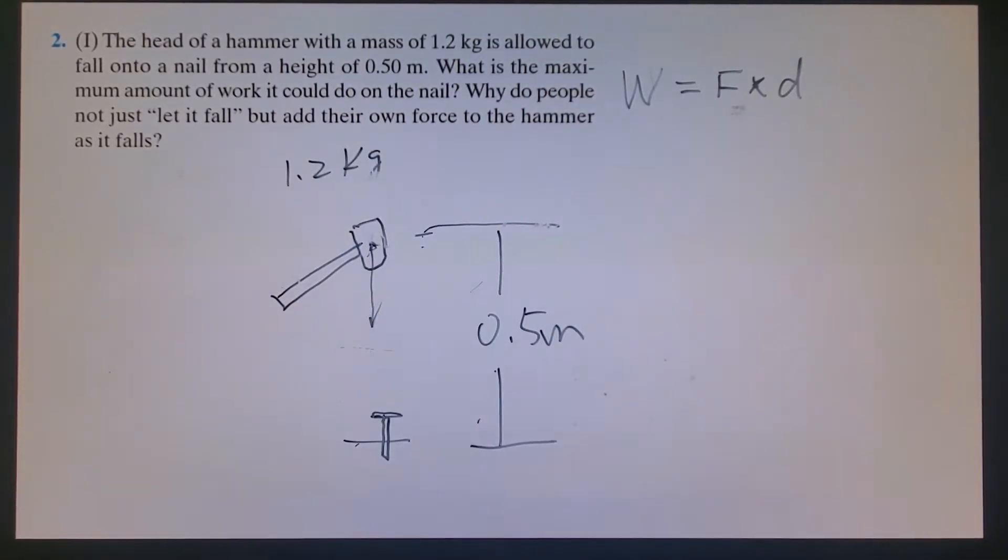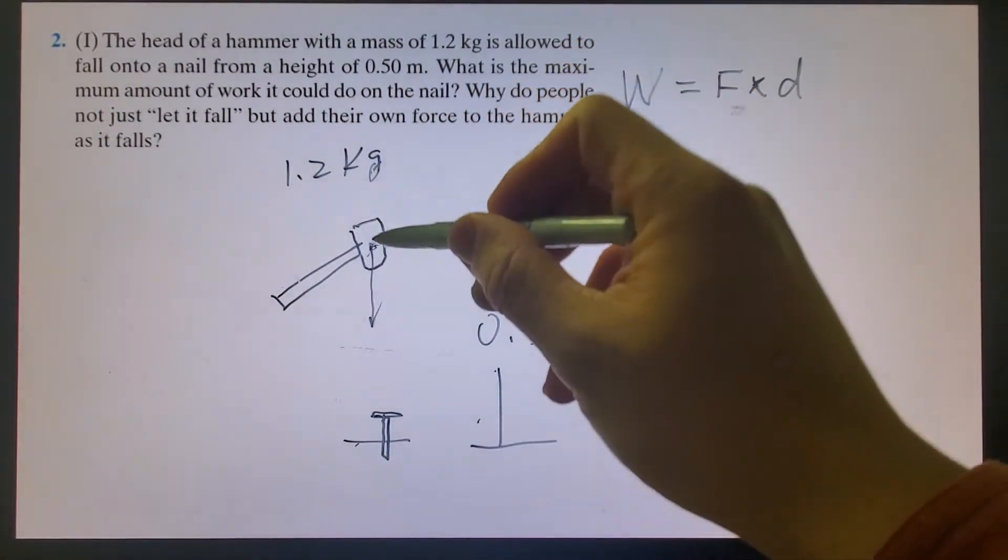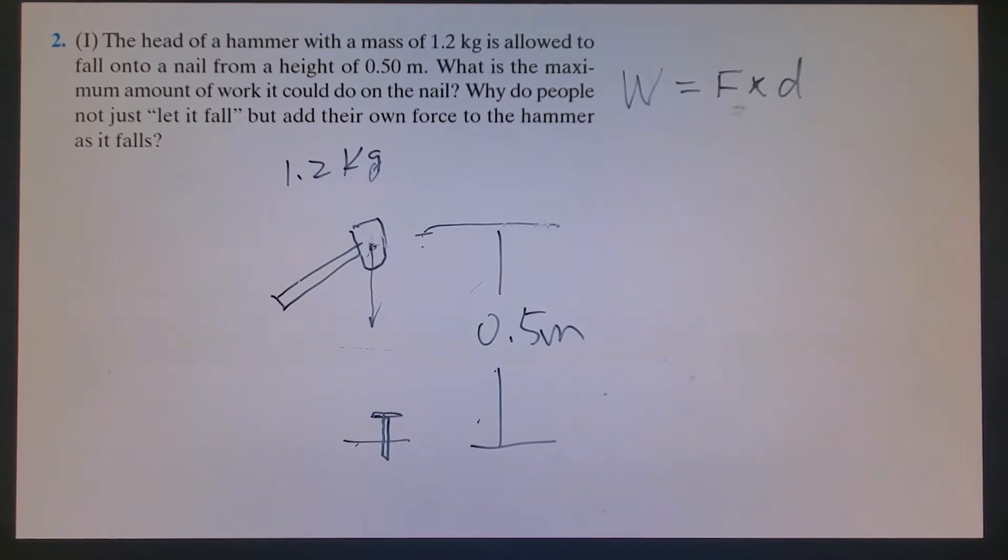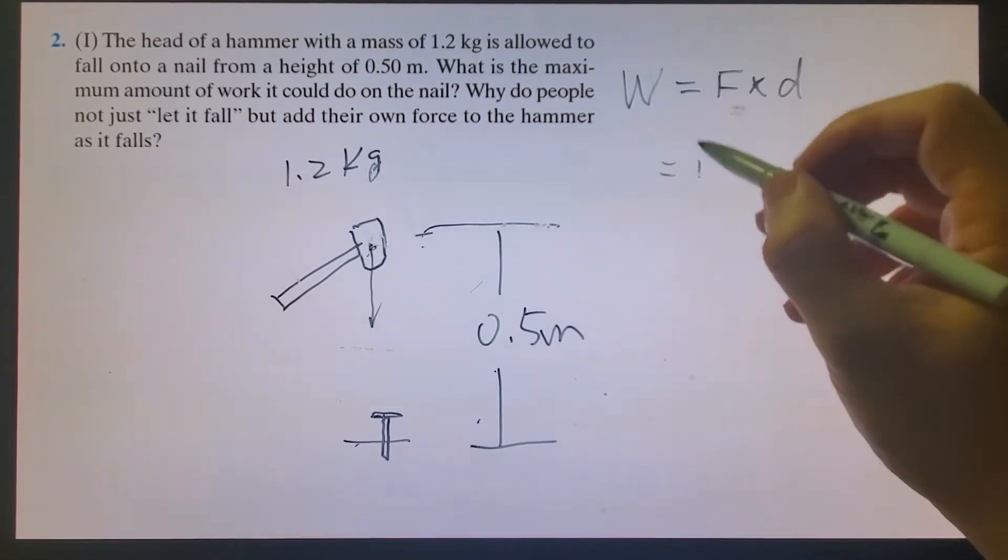Let's assume this is the only force and we control it to move down at constant velocity. That force is the mg force, m times g, and the distance is 0.5 meter.